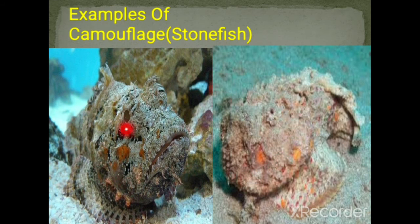Another example is the poisonous stonefish, which looks just like a stone. It can blend itself with the stones on the seabed, waiting to grab its passing prey.